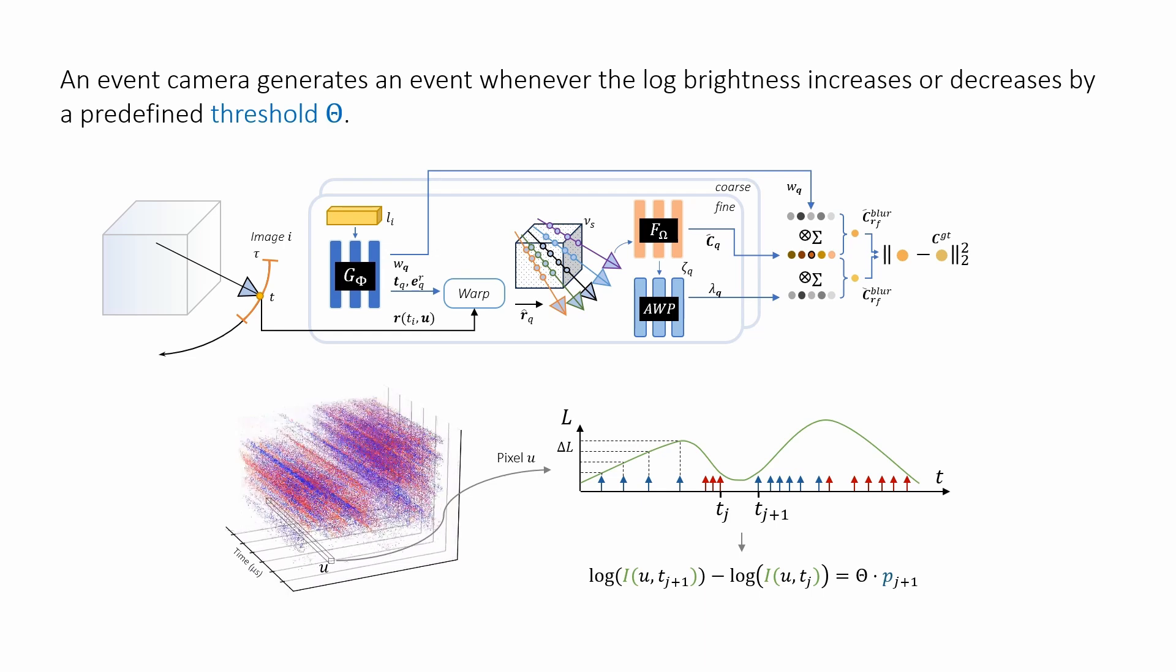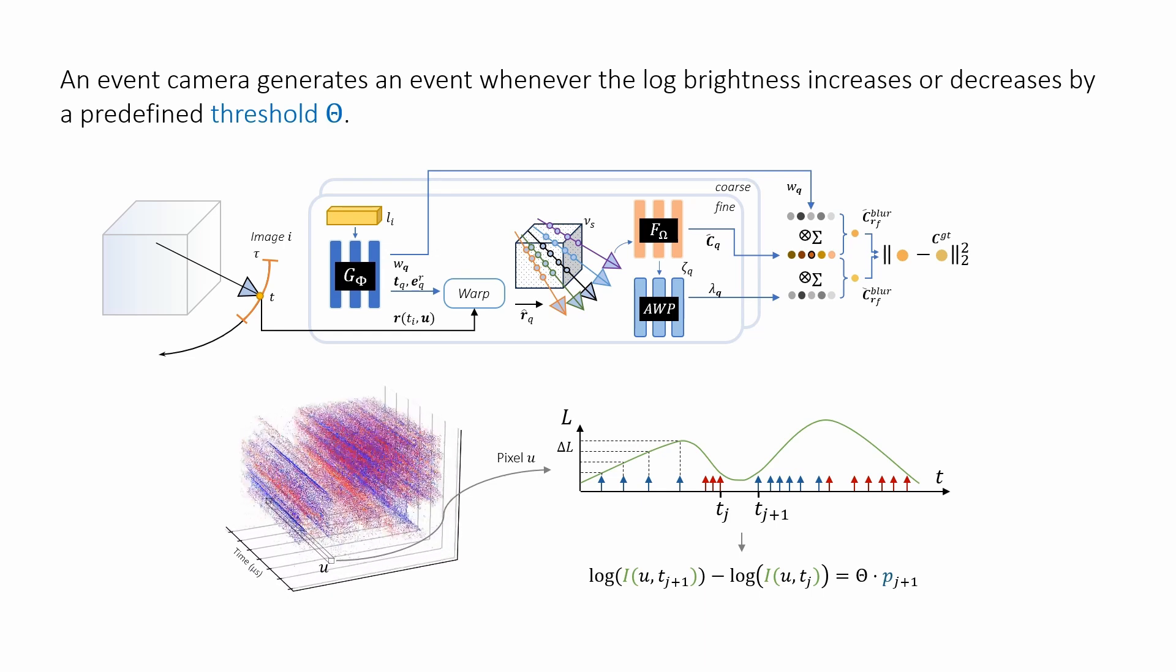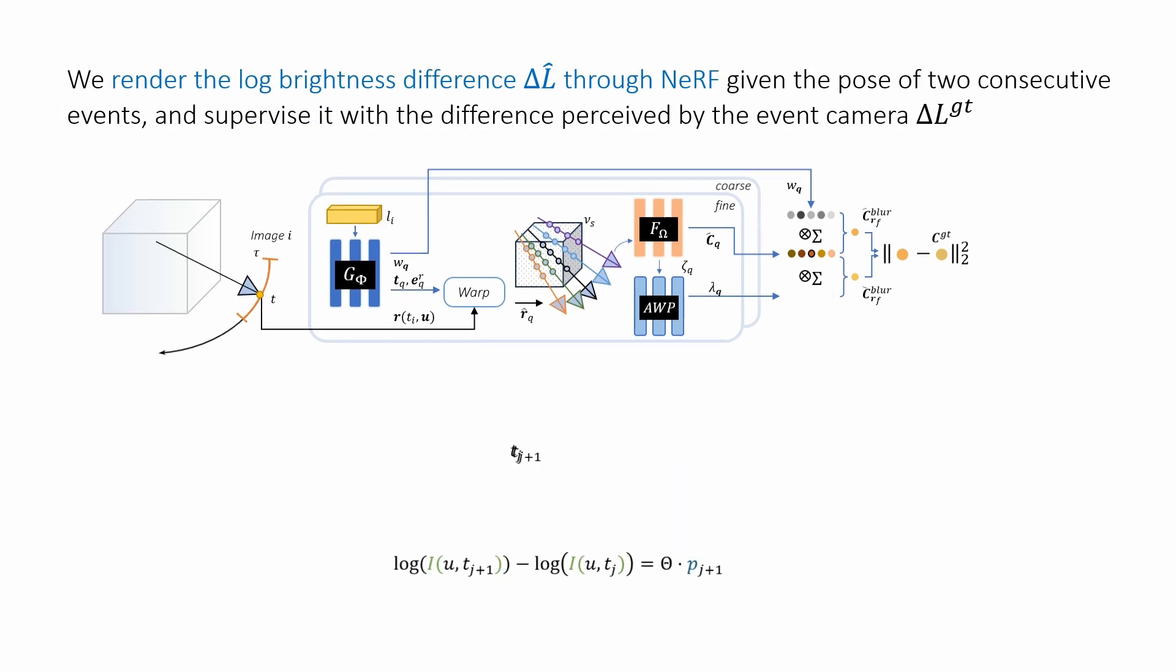An event pixel continuously monitors the logarithmic brightness and generates an event whenever it crosses a predefined threshold, theta. Given two consecutive events,